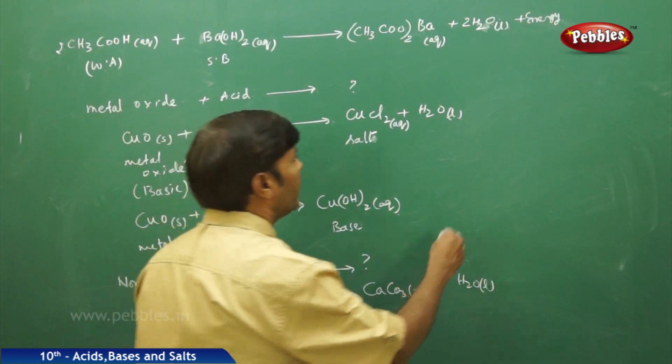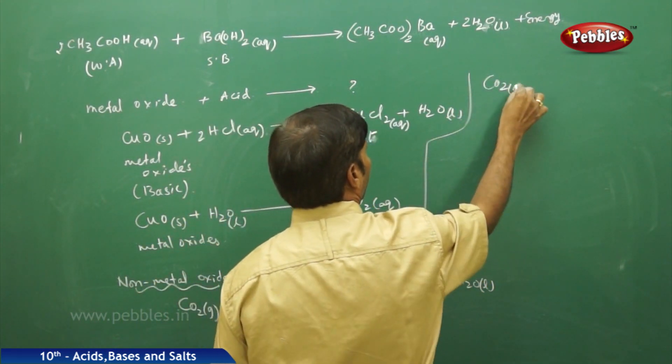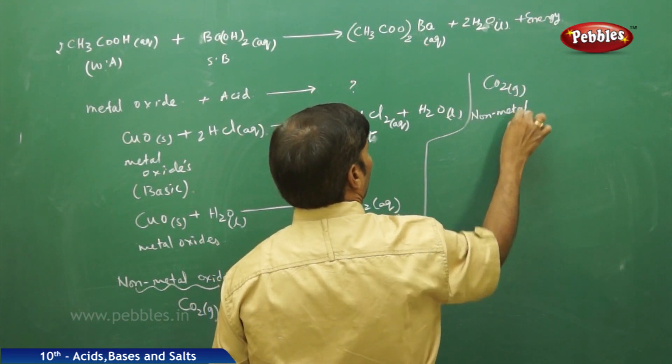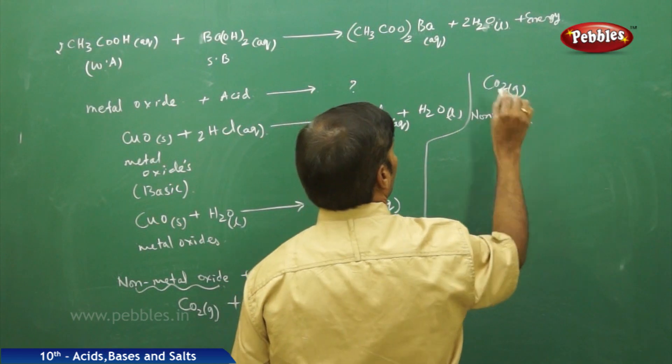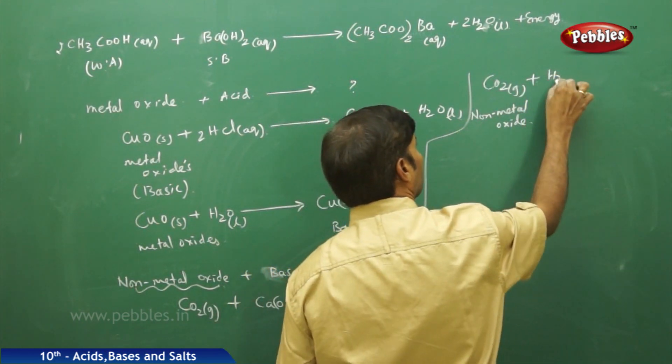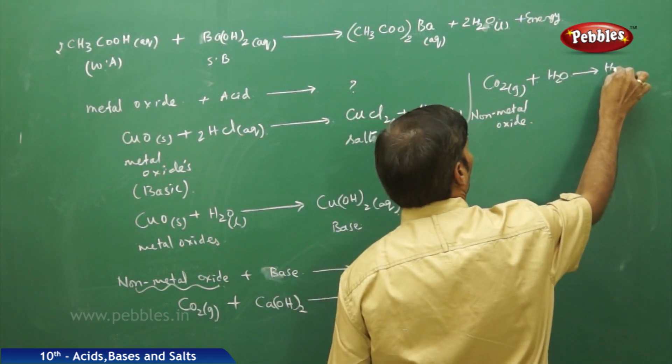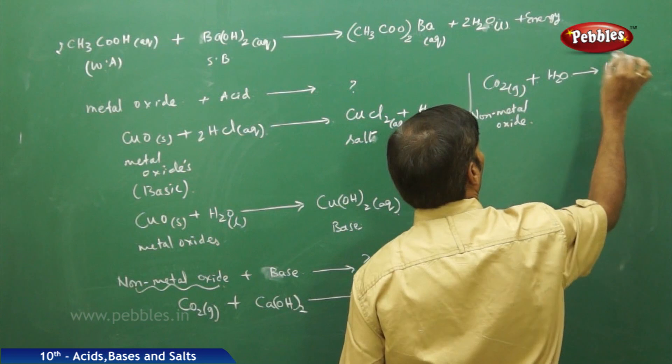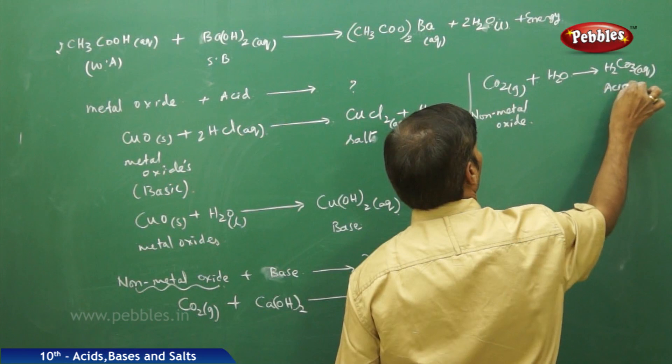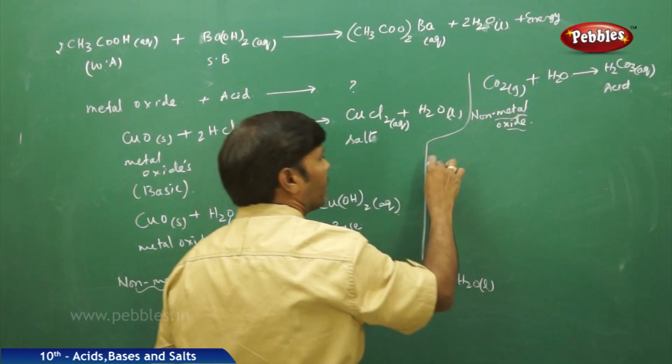Similarly, if you take the carbon dioxide, which is a non-metal oxide, non-metal oxide gas, reacts with, that is subjected to hydrolysis, it gives H2CO3 aqueous. It is an acid. It means all non-metal oxides are therefore acidic in nature.